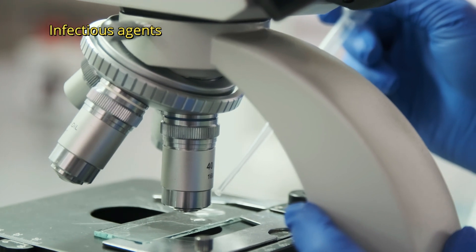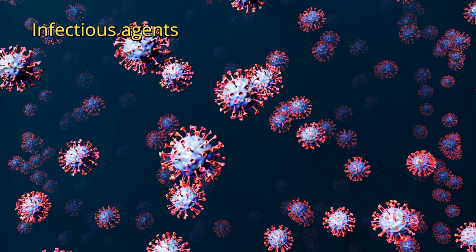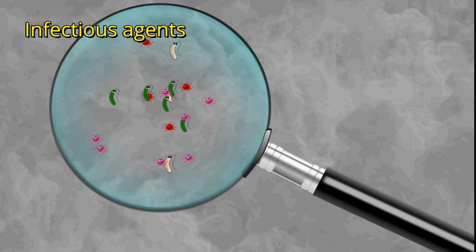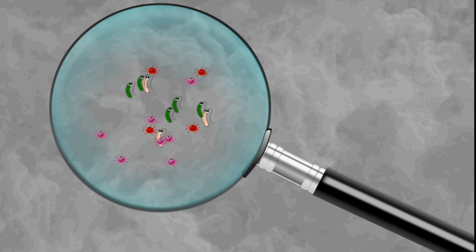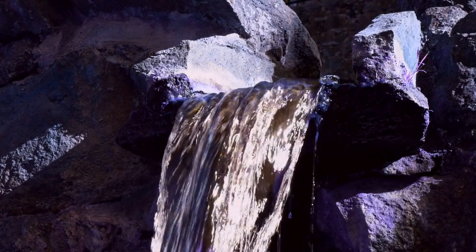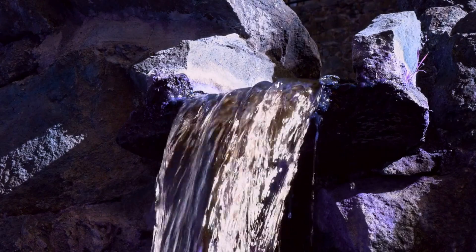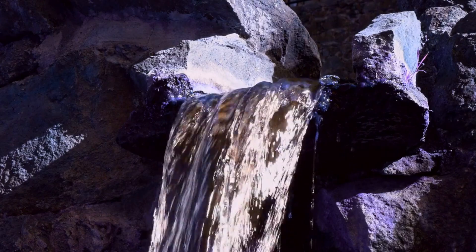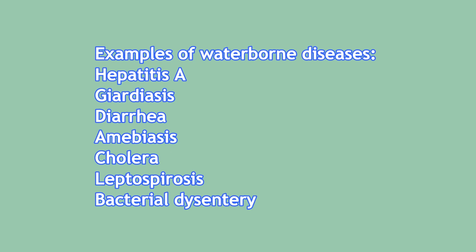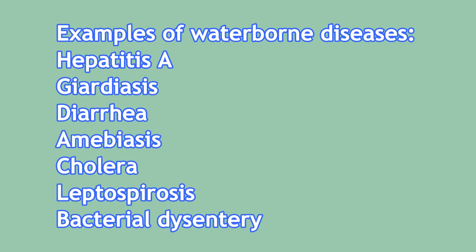Infectious agents, such as viruses and bacteria, can cause the transmission of diseases through water and can contaminate water through human and animal waste. Some examples of waterborne diseases are hepatitis A, giardiasis, diarrhea, amoebiosis, cholera, leptospirosis, and bacterial dysentery.